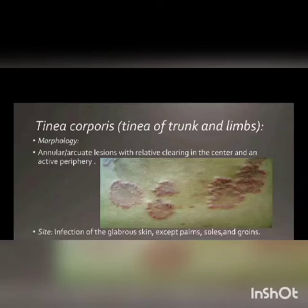The annular lesion has relative clearing of the center and an active periphery. When observing a tinea corporis lesion, the center portion will not have much itching or problem — it will be clear. The peripheral ring-shaped region will be more active, and that helps the infection spread from one area to another.